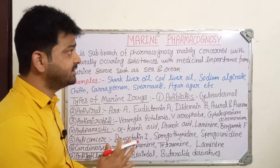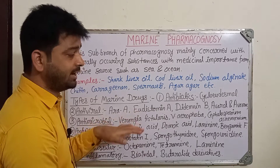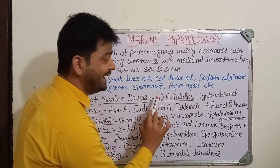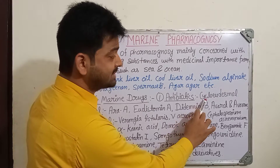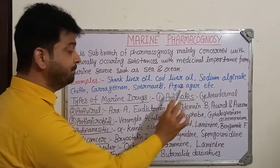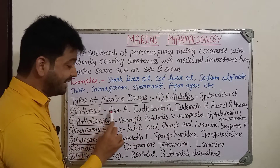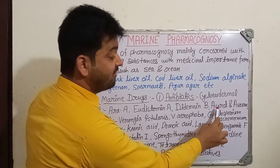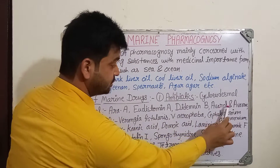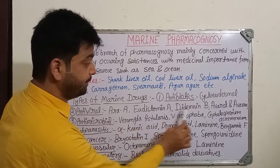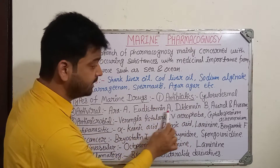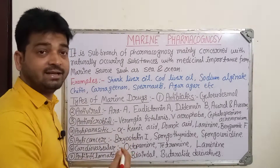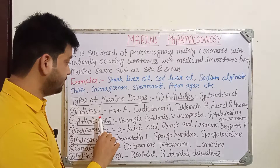When we look at the list of marine drugs, it is quite long, so I am trying to summarize so you can at least remember the names. The types of marine drugs: first, antibiotics - an example is cycloeudismol, an antibiotic obtained from a marine source. Second, antivirals - drugs which act against viruses. Examples include eraa, eudistomine A, didemnin B, avarol, and avarone.